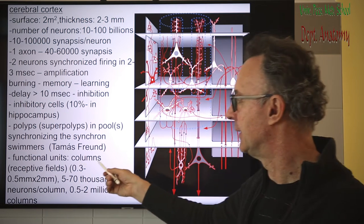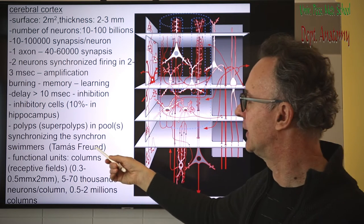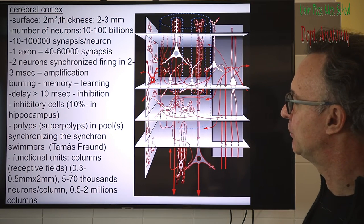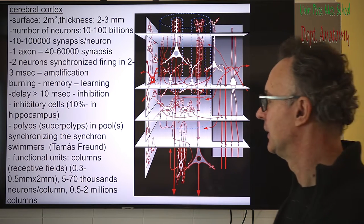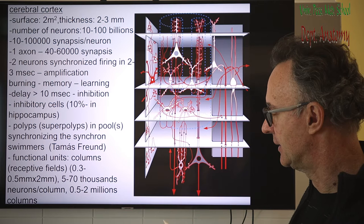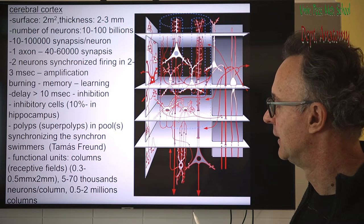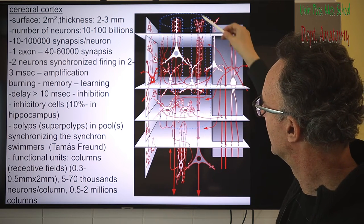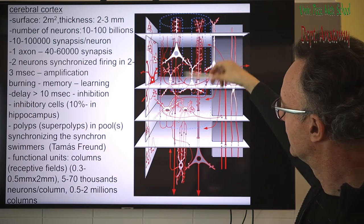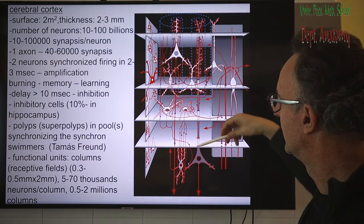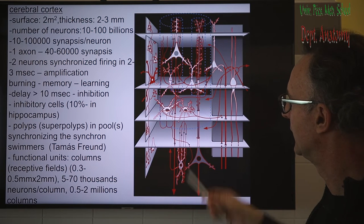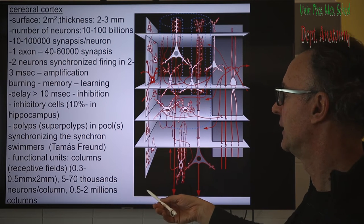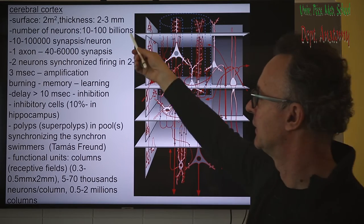Another interesting unit in the cerebral cortex is the column, but this is only a functional unit — in contrast to the cerebellum where Golgi cells form morphological and functional units. Here we don't see any cell that determines an anatomical unit, just functional units, including pyramidal cells more superficially and deeper, with mostly interneurons in between. The number of columns may also vary in the textbooks because the number of cells also differs.